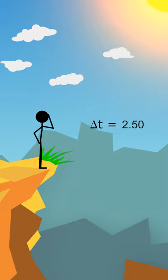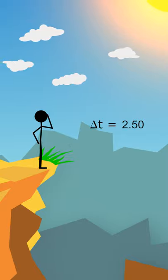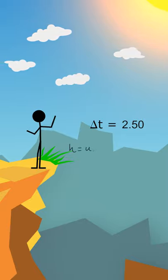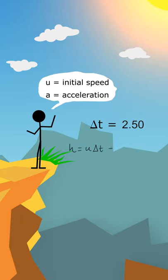Let's use a kinematics equation. The equation is h, which is the height of the cliff, is equal to u times delta t plus a half times a times delta t squared.